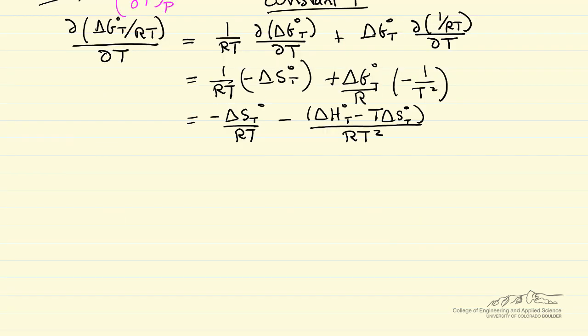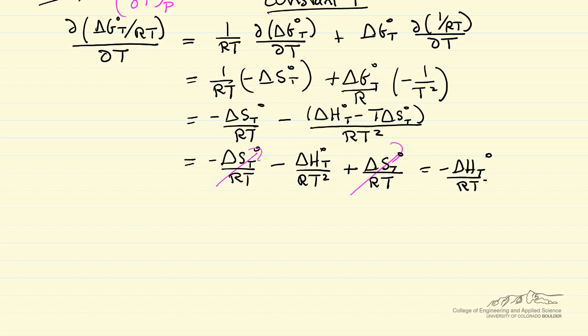I've made the substitution for delta G in terms of delta H and delta S. Let me do one more simplification of this equation. We notice the first term and the third term are identical with opposite signs, so they cancel out, and we end up with minus delta H standard over RT squared.